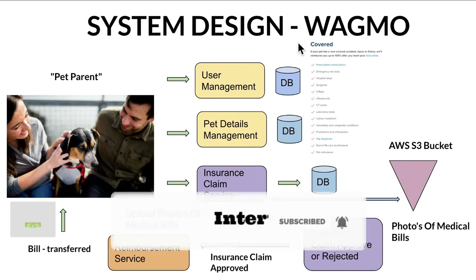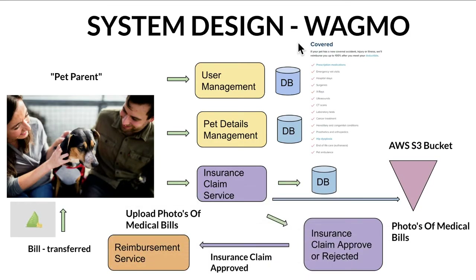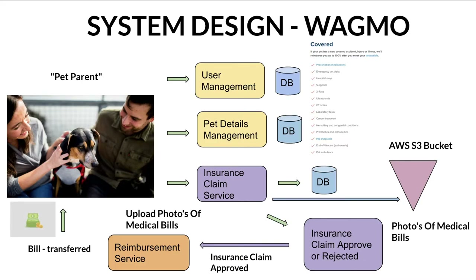Now I'm going to share the system design for the Wagmo product. For the Wagmo insurance platform, I can think of a few components: user management to manage the user profile, pet details management to register the pet details, and another component called insurance claim service, which is going to take the medical bills, process them, and take a decision for the pet parent.